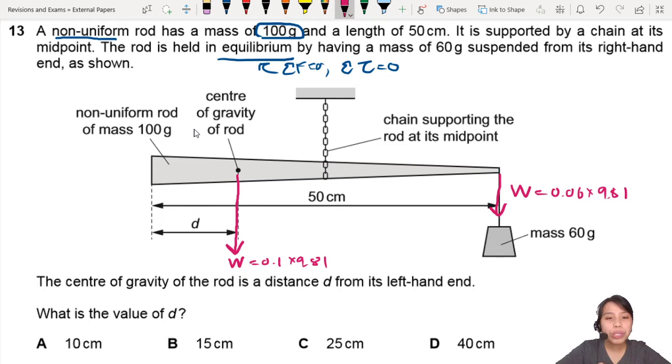What are we supposed to do? Center of gravity is distance d from the left-hand end. What is the value of d? So this is a moment in equilibrium question.